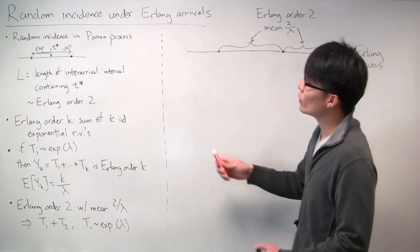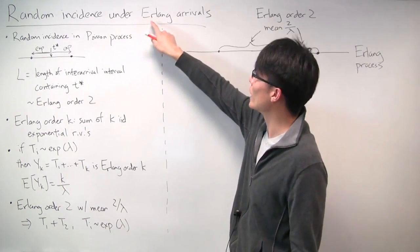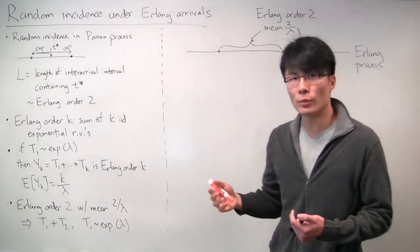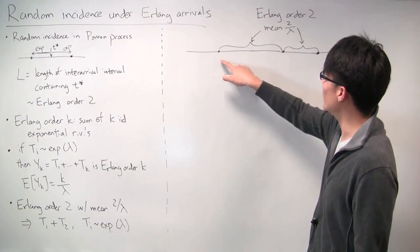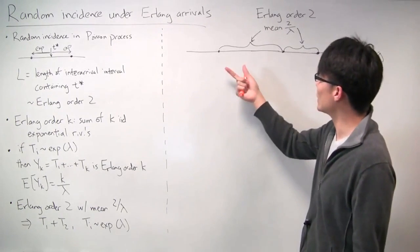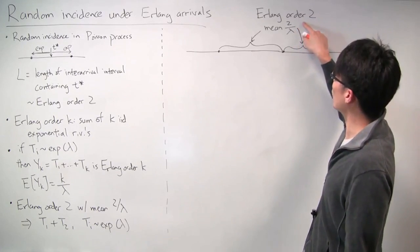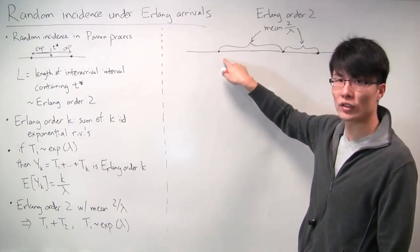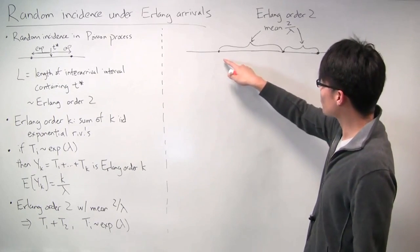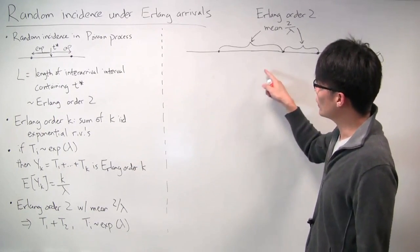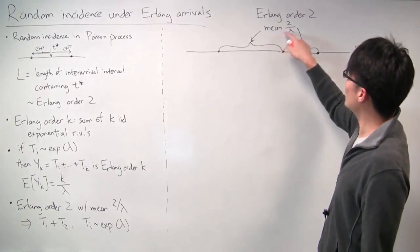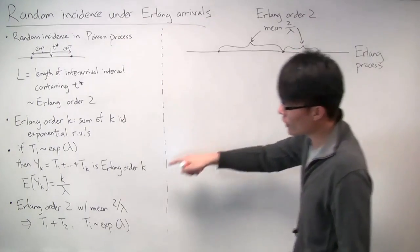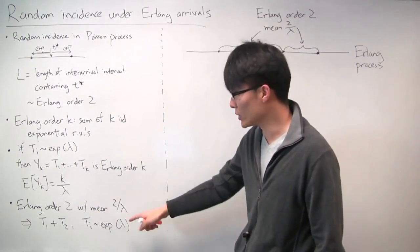In this problem, we're dealing with random incidence not under Poisson processes but under an Erlang process with Erlang arrival times. Specifically, instead of an inter-arrival time being exponentially distributed, in this process an inter-arrival time is distributed as an Erlang random variable of order 2 with mean 2 over lambda. This is no longer a Poisson process. But we know that the Erlang order 2 inter-arrival times can just be reinterpreted as a sum of two simple exponentials, each with parameter lambda.